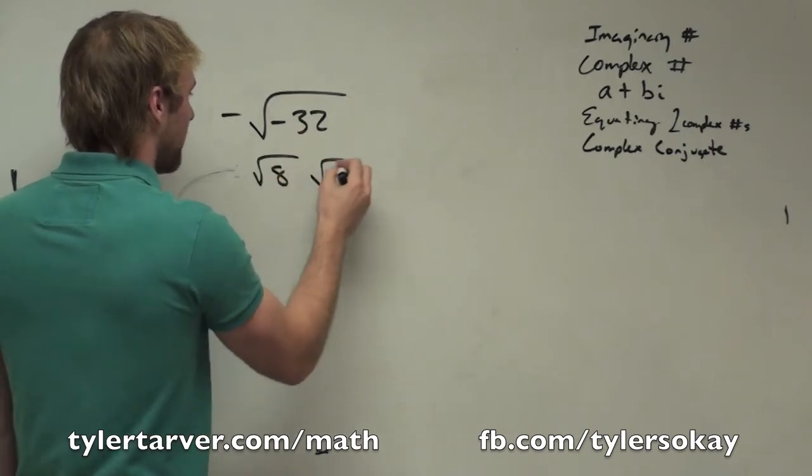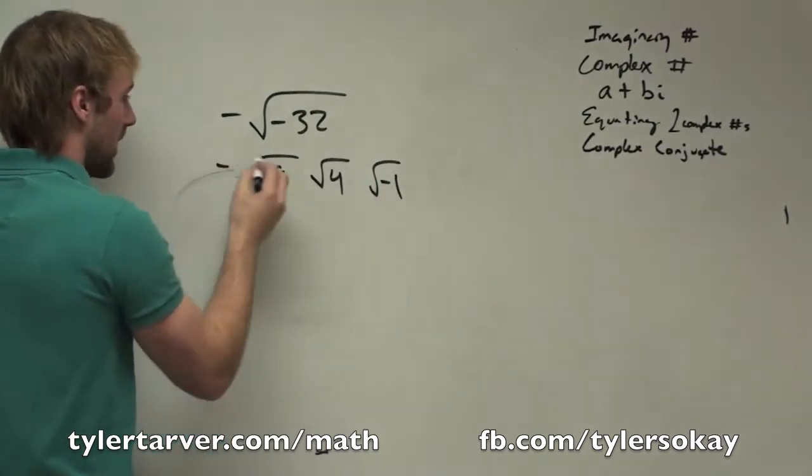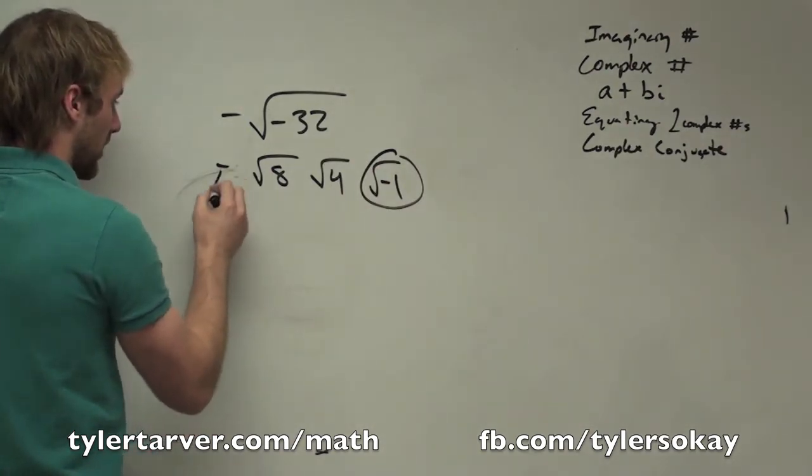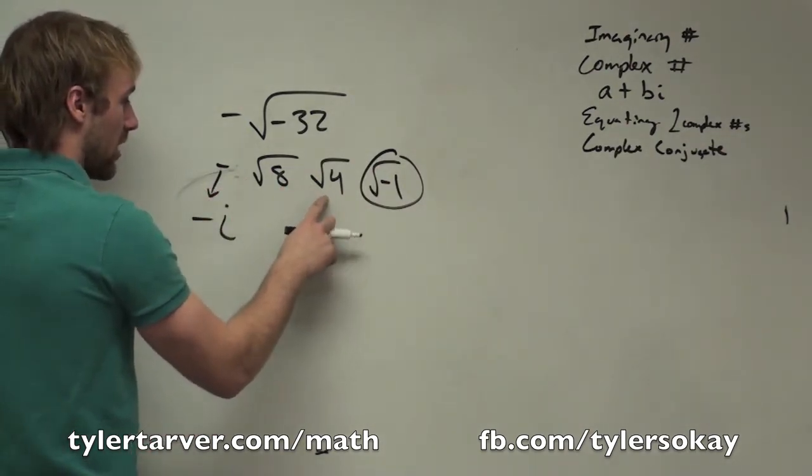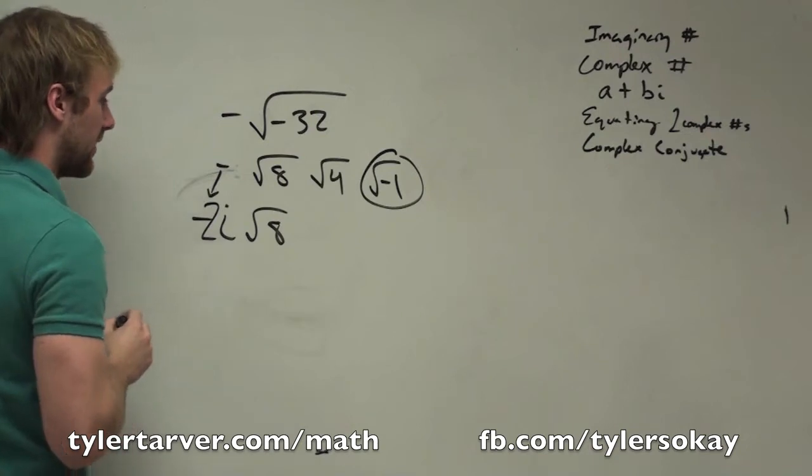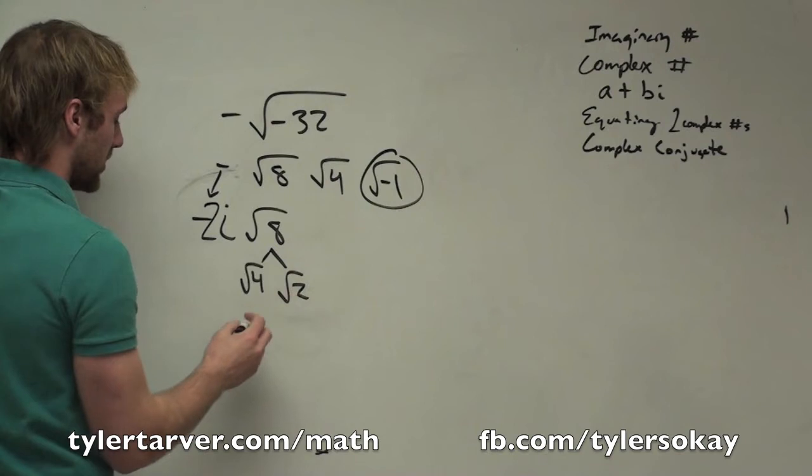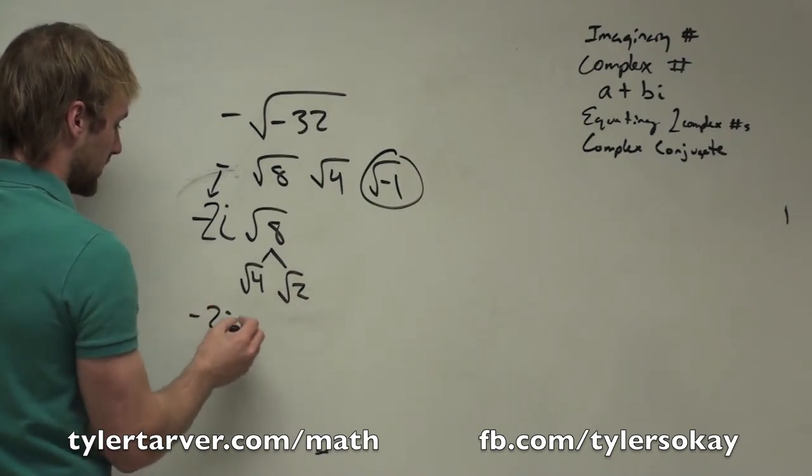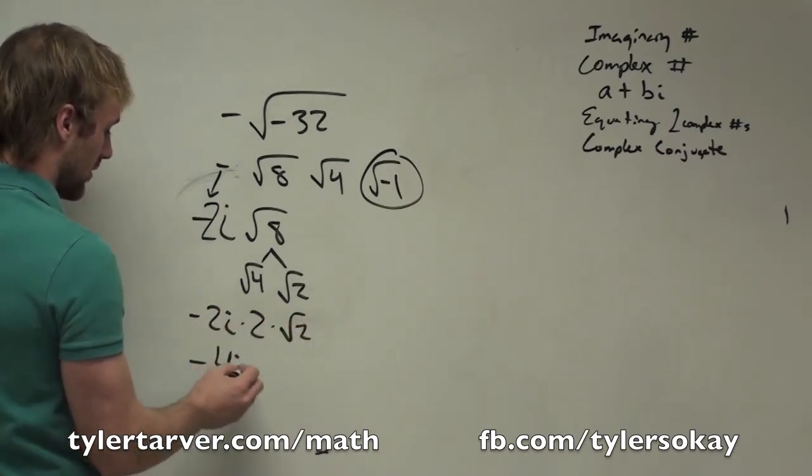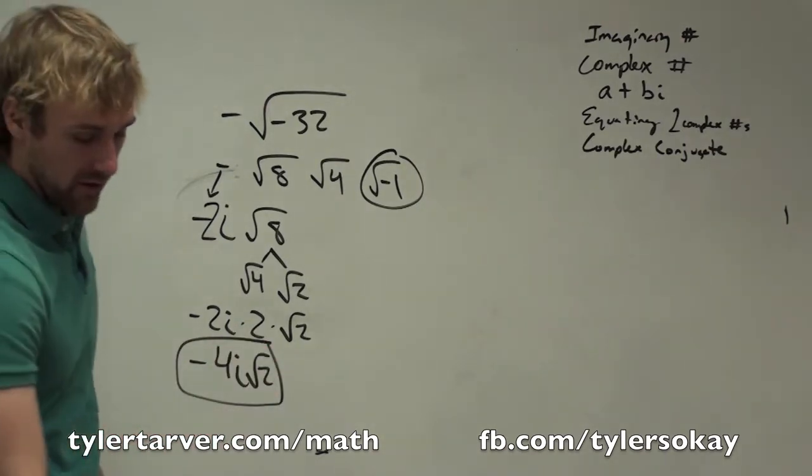So you split it up into 8, 4, and what else? Negative 1. And then negative's still there. Now, what happens with this? It becomes 2i. I'm bringing this down. It becomes i. What does radical 4 become? 2. I'm going to put it right there. That's still radical 8. Can we simplify radical 8 any? 4 and 2. Radical 4 and radical 2, which that is negative 2i times 2 times radical 2. What's 2 times 2? 4. You are completed.